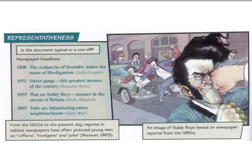For representativeness, sociologists should ask whether the evidence provided in the document is typical or a one-off. A key issue, particularly with historical documents, is whether the surviving documents are typical of those that got destroyed or lost. Not all surviving documents are even available for researchers to use — for example, certain public documents produced by the government may not be available for at least 30 years due to issues of national security.